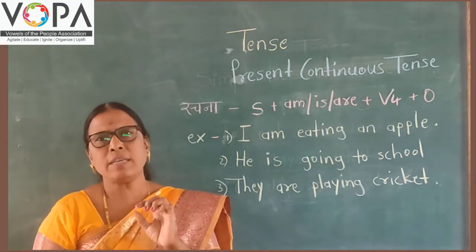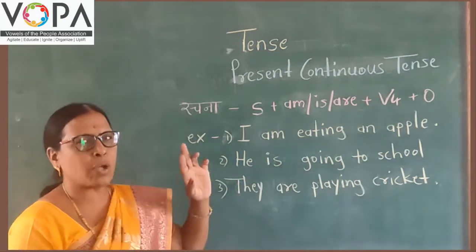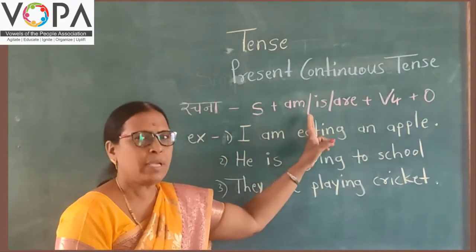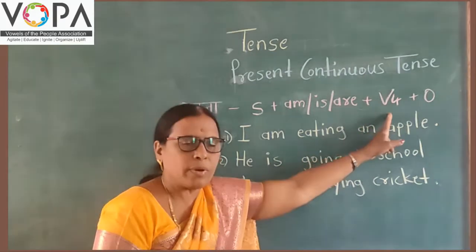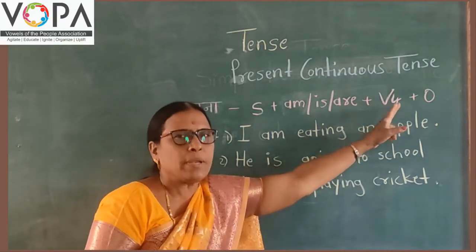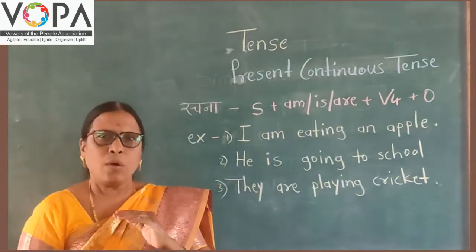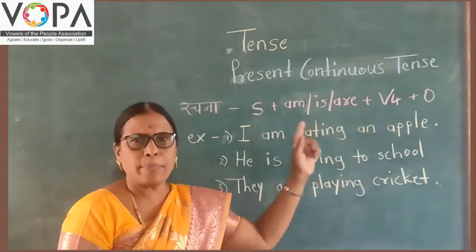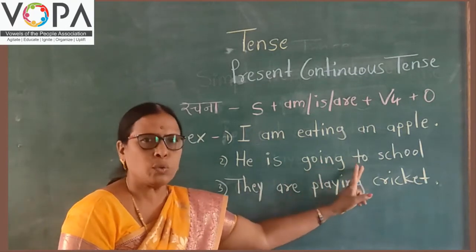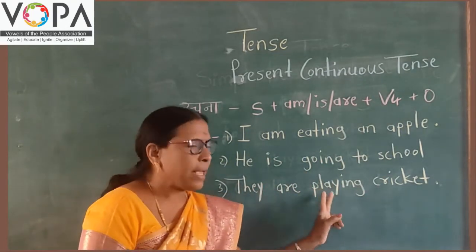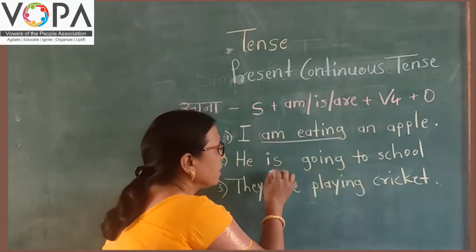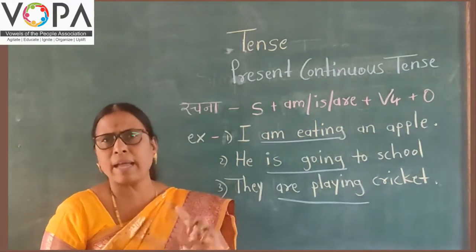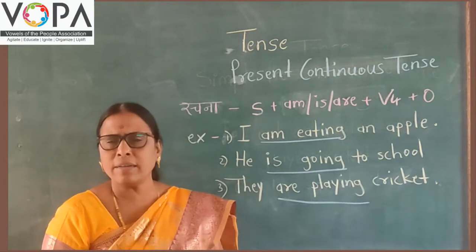Now we see the structure of this tense. Now we see the examples. I am eating an apple. He is going to school. They are playing cricket. The words eating, is going, and are playing tell us that this is the present continuous tense.